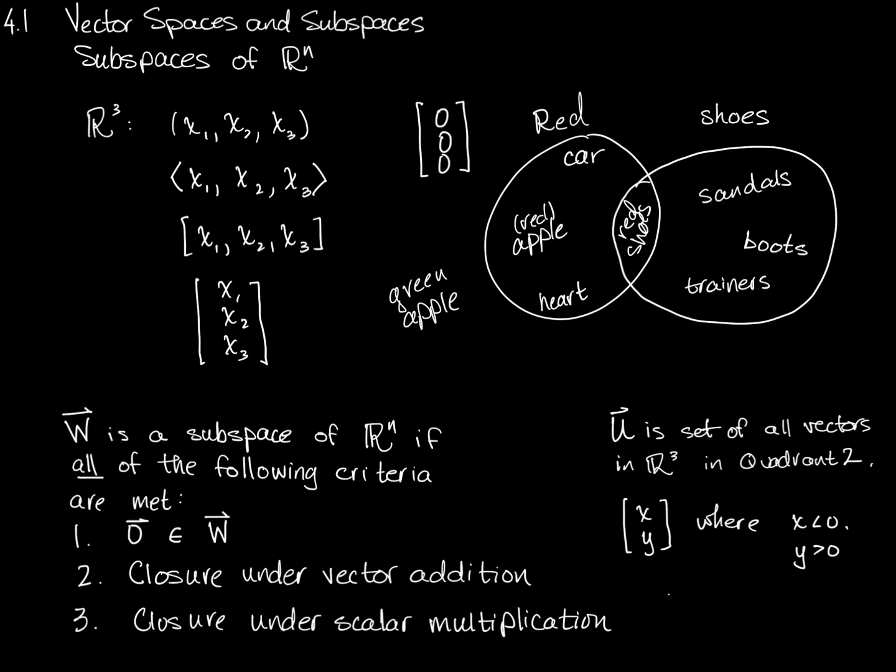If I grab just two of those, let's say negative 1, 3, and negative 2, 5, and add them together, I'll get negative 3, 8, which is in quadrant 2. So, this subset U is closed under vector addition. That criterion is met.